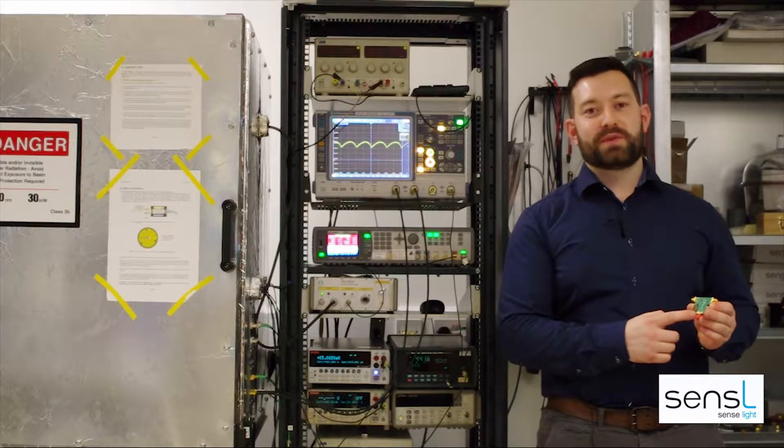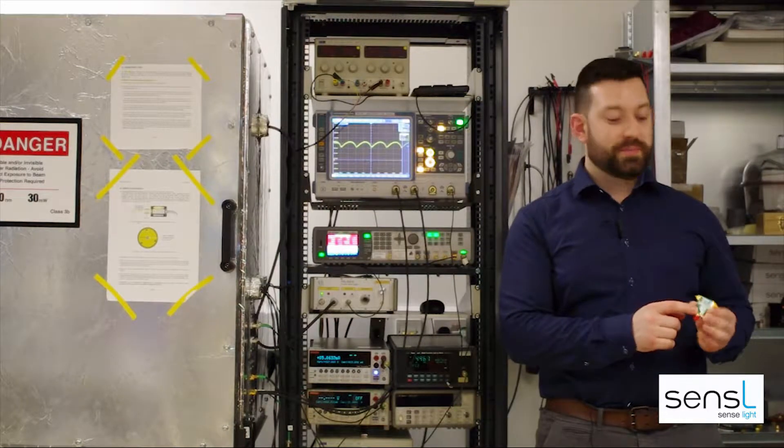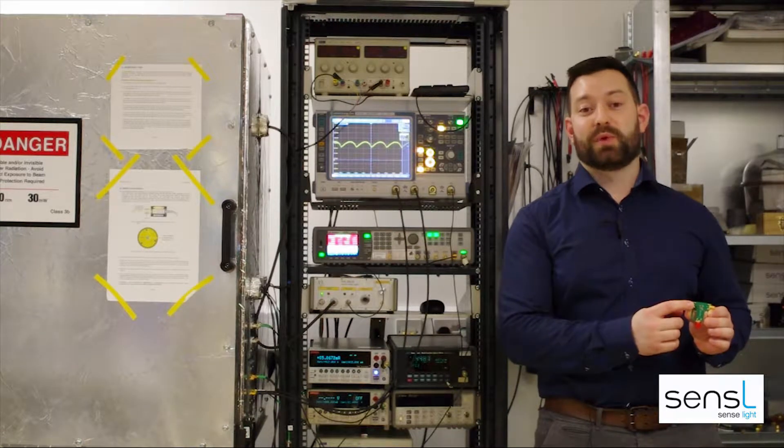Power supply through VBIAS which is identifiable by the red cap. The polarity of VBIAS is also written on the board. The other two SMA connectors are for the outputs, the standard output and the fast output.